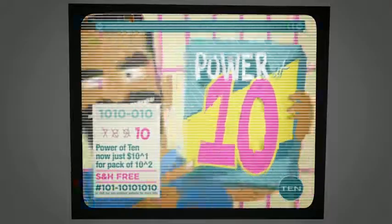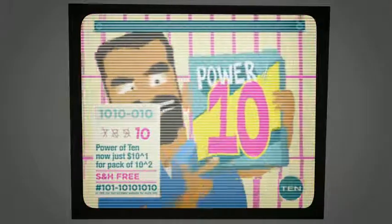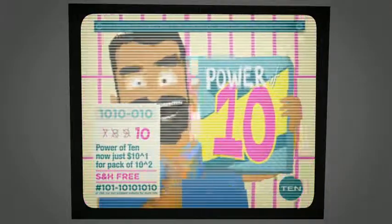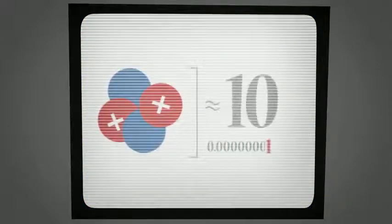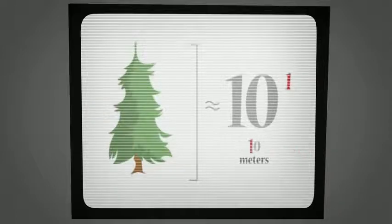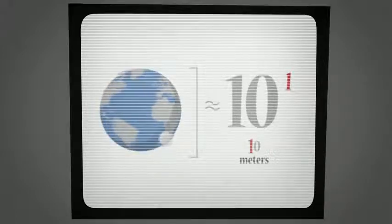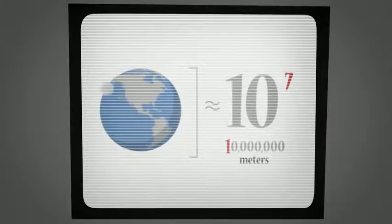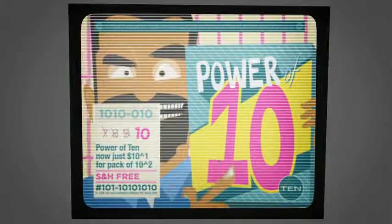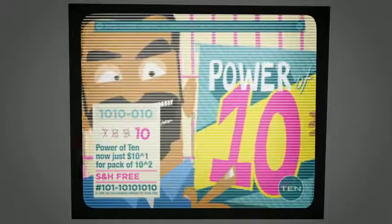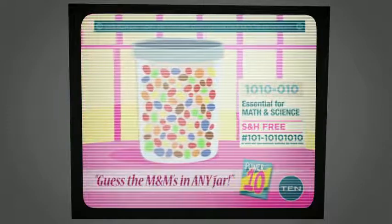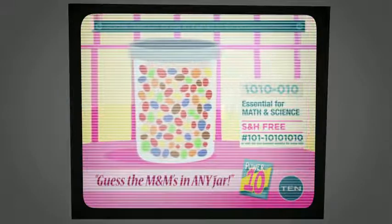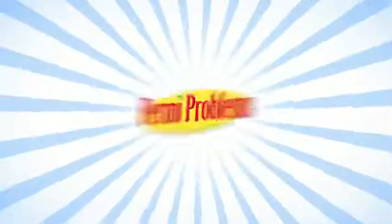We can use the power of 10 as a tool in making quick estimations when we do not need or care for the exact value of a number. For example, the diameter of an atom is approximately 10 to the power of negative 12 meters, the height of a tree is approximately 10 to the power of 1 meters, and the diameter of the Earth is approximately 10 to the power of 7 meters. This ability can come in handy, like when guessing the number of M&Ms in a jar, but is also an essential skill in math and science, especially when dealing with Fermi problems.